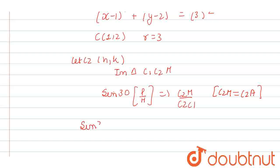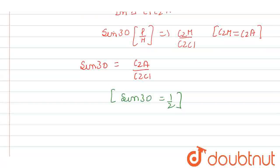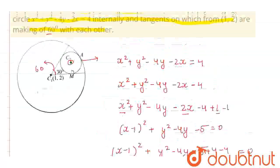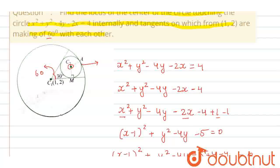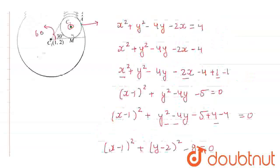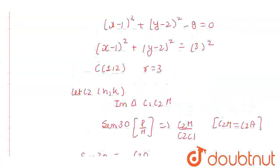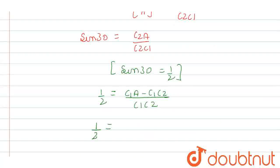From here we get sine 30 equals C2A divided by C2C1. We know the trigonometric value of sine 30 is 1/2. So, from here we get 1/2 equals C2A, which can be written as C1A minus C1C2, divided by C1C2. C1A is the radius of our bigger circle, and we have found the radius to be 3. So, 1/2 = (3 - C1C2) / C1C2.